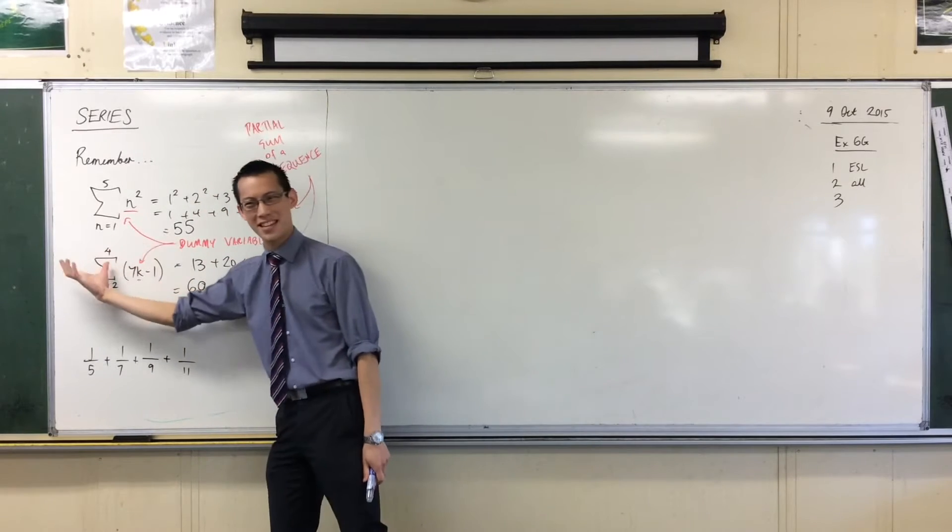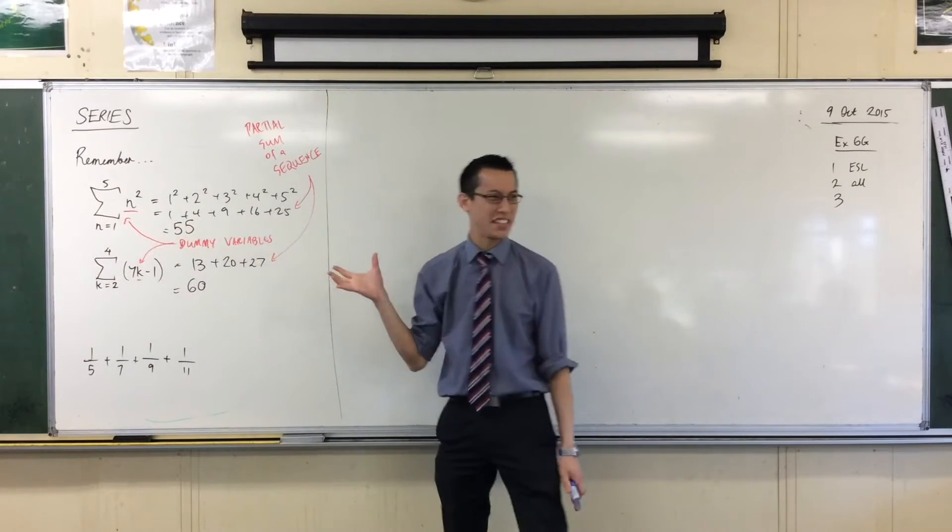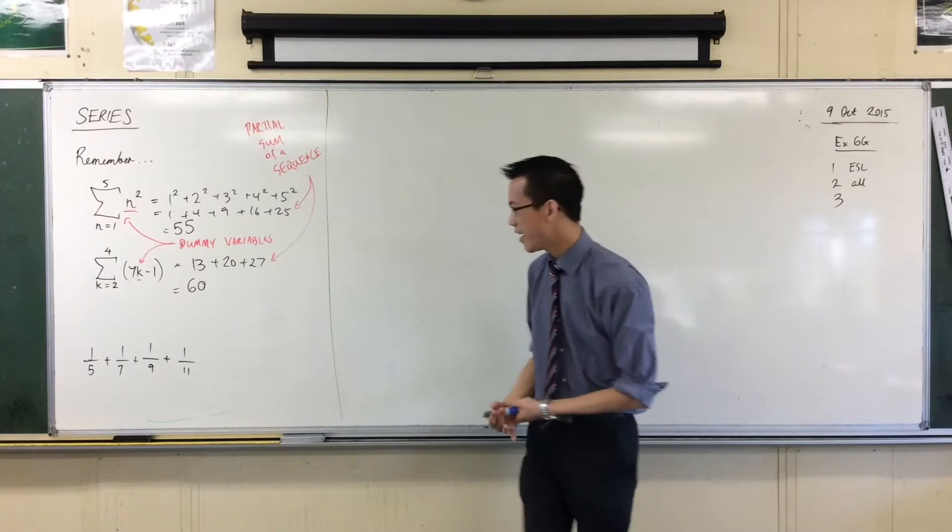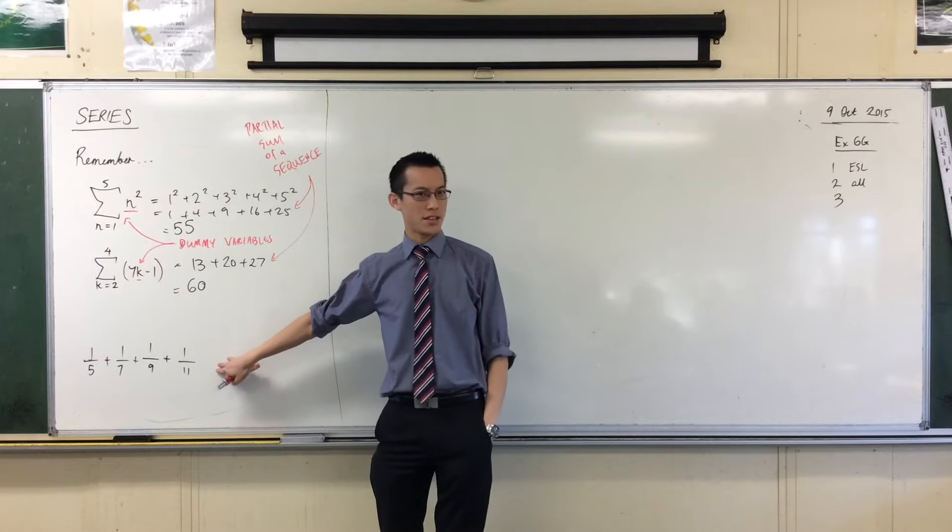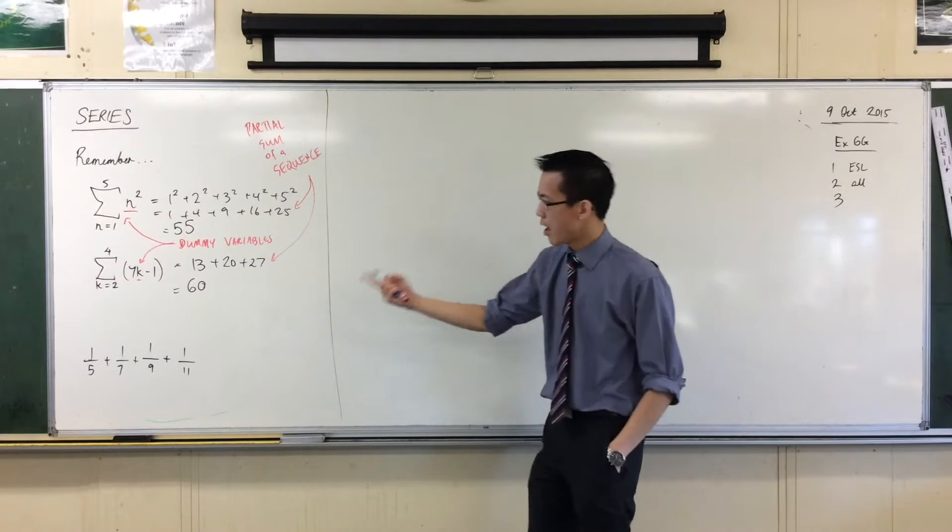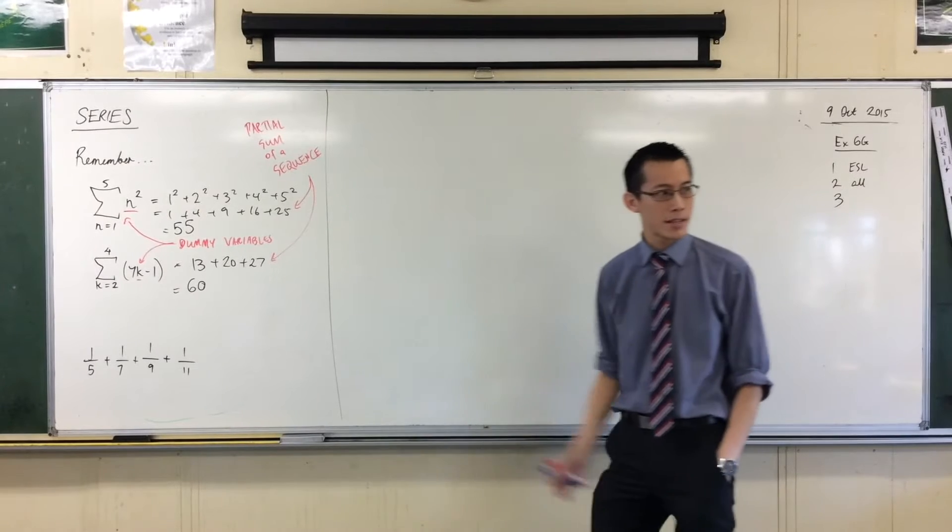That's what happens when you're reading the sigma notation and you're going to the series, right? But you can just as easily go in the opposite direction, can't you? If I handed you this and I said here is a partial sum of a sequence, right? You can see that is this an AP or a GP?